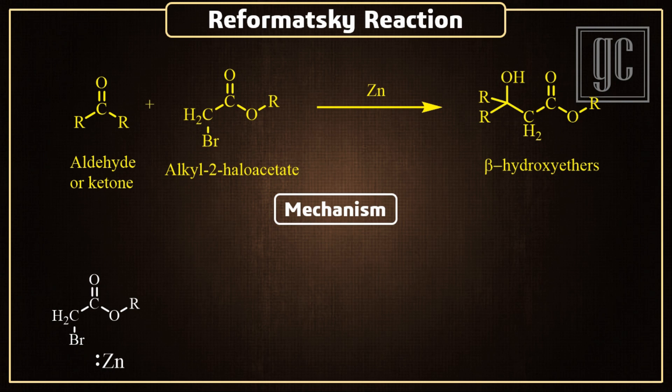Because of that, zinc electrons attack on the electron-deficient carbon atom, and at the same time it interacts with the halo group. As a result, insertion of zinc in between the carbon and halogen bond takes place, and this intermediate is formed.